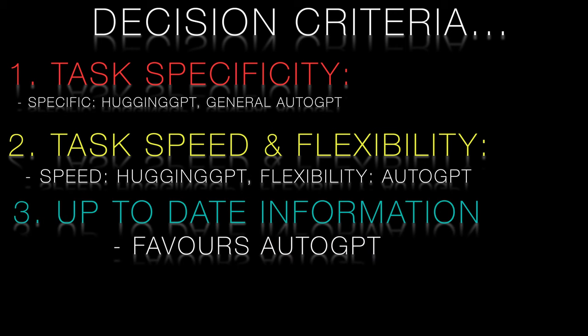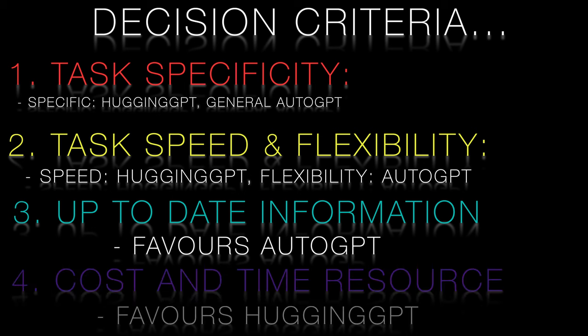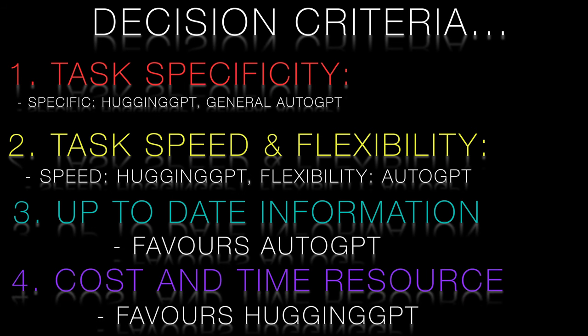Up-to-date information: Auto-GPT may provide more current information, while Hugging-GPT's expert models might have slightly outdated information. Cost: Auto-GPT's internet search-based approach can lead to higher costs for using the OpenAI GPT platform, as I found out with Fast Simon, while Hugging-GPT might be more cost effective for specific tasks.